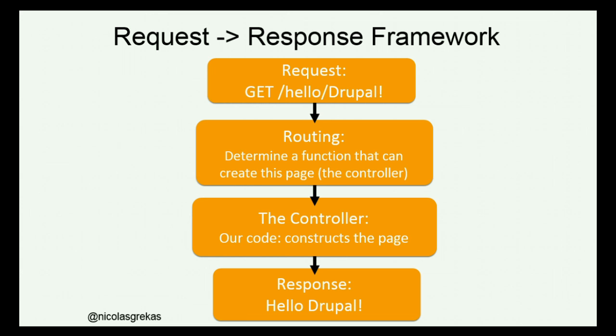And basically this is the kind of thing Drupal does internally: catching the request, creating a request object, dealing with lifecycles, routing with the Symfony router, calling the action — the controller class — and providing a response: HTML usually, or JSON if you do APIs.